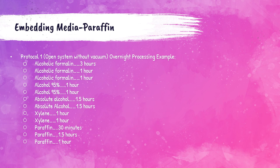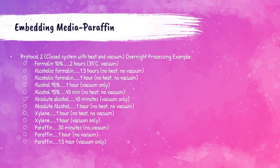In protocol one, tissues are placed in alcoholic formalin for three hours, then one hour, then another hour. Then 95% alcohol for one hour, then again for one hour. Then an hour and a half in absolute alcohol, another hour and a half of absolute alcohol. Then one hour of xylene, another hour of xylene. Then 30 minutes of paraffin, one and a half hours of paraffin, and then another hour of paraffin.